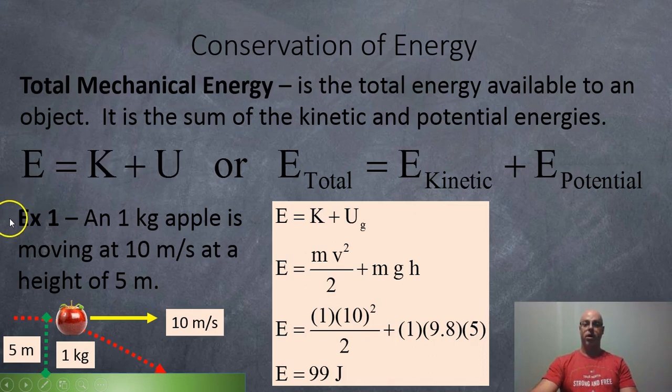For example, here we've got a 1 kilogram apple moving at 10 meters per second at a height of 5 meters. At this instant in time, how much energy is available to the apple?